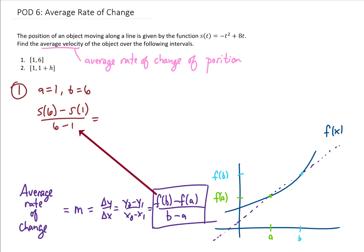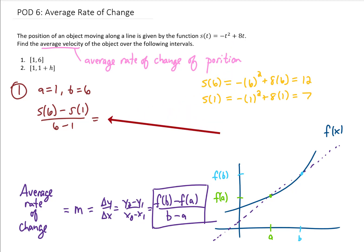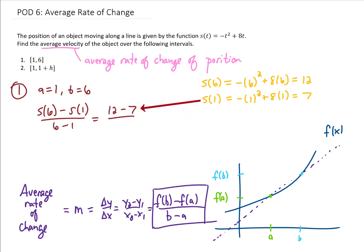We can find s of 6 off to the side simply by replacing t with 6. Noting that the negative sign is not being squared — it needs to stay here — we get a value of 12 for s of 6. We can find s of 1 just by replacing t with 1, and we get s of 1 equals 7. So we want s of 6 minus s of 1, which is 12 minus 7 in the numerator.